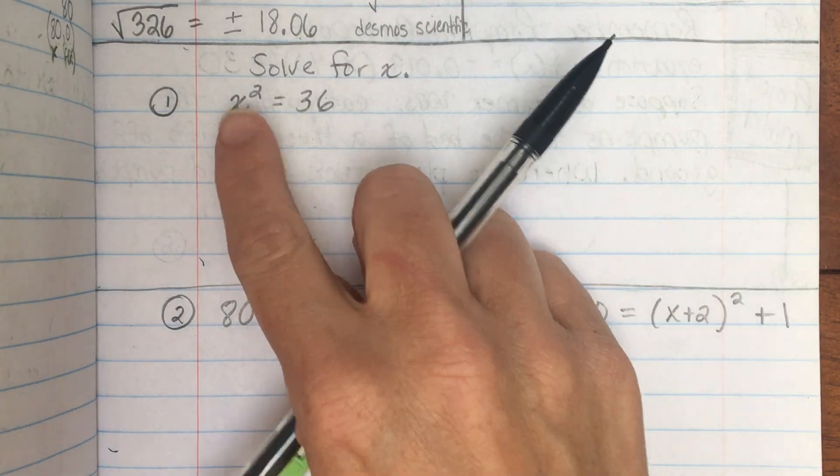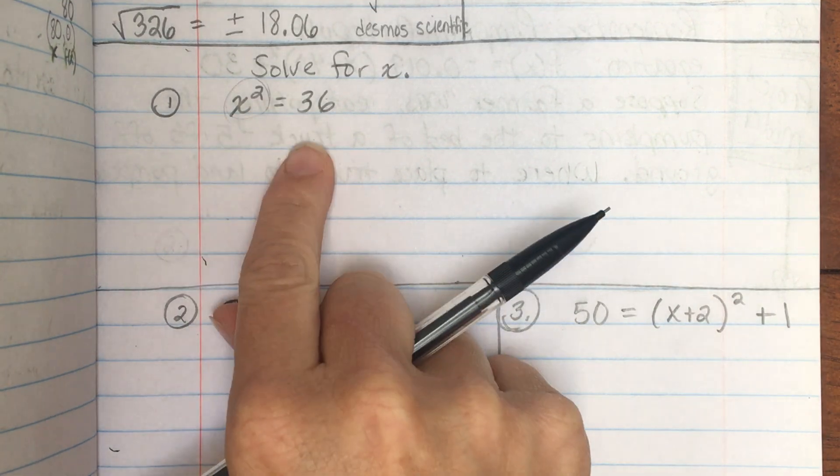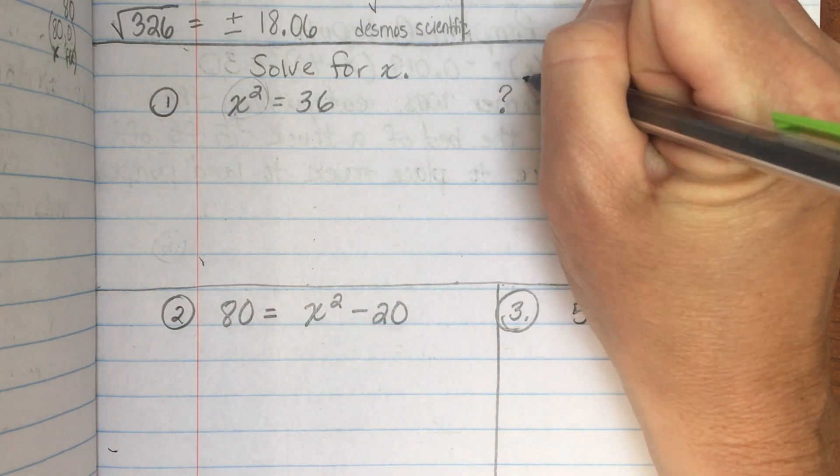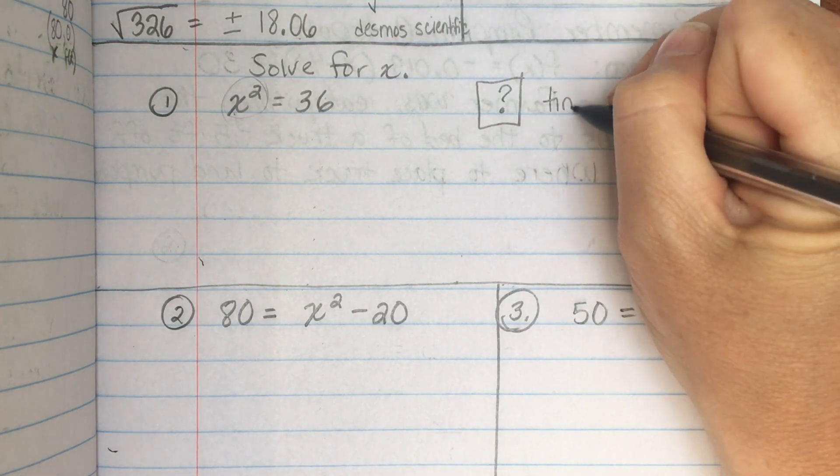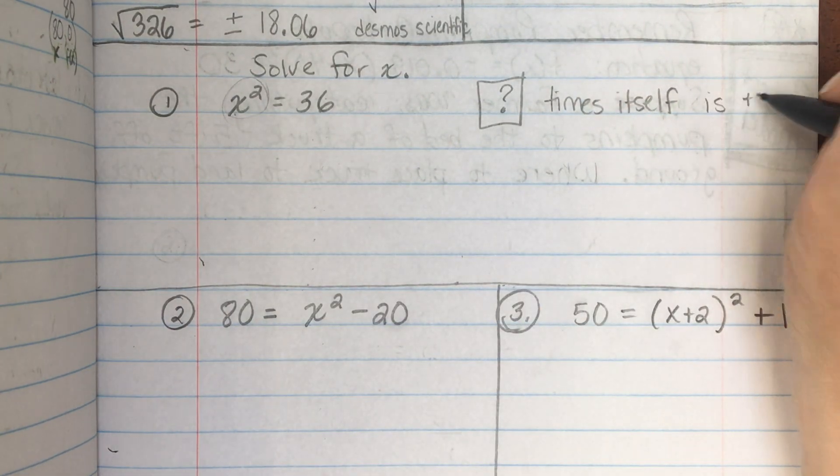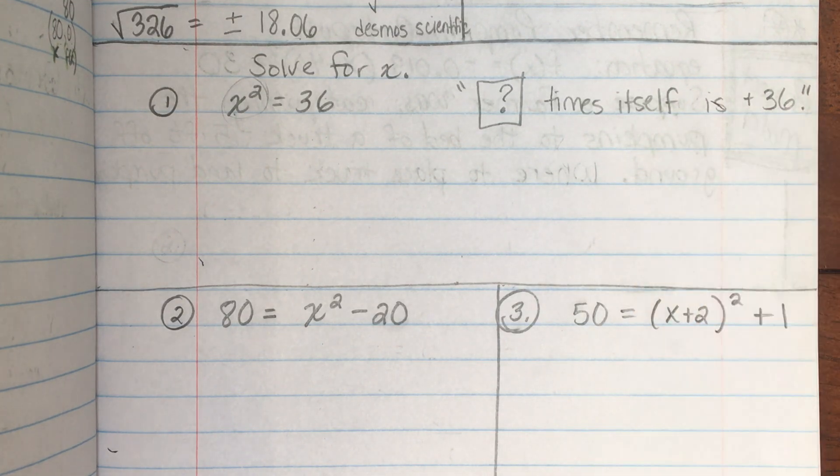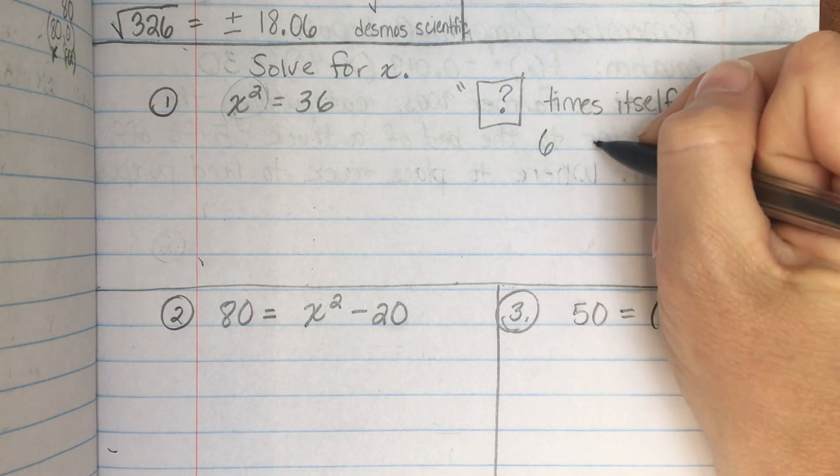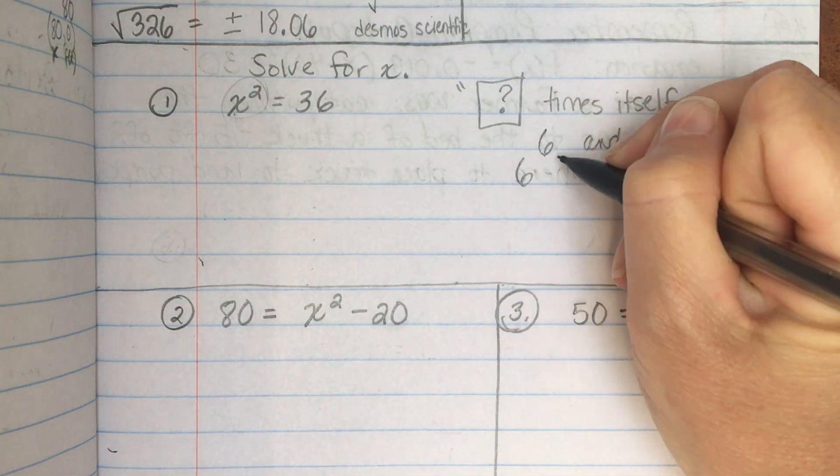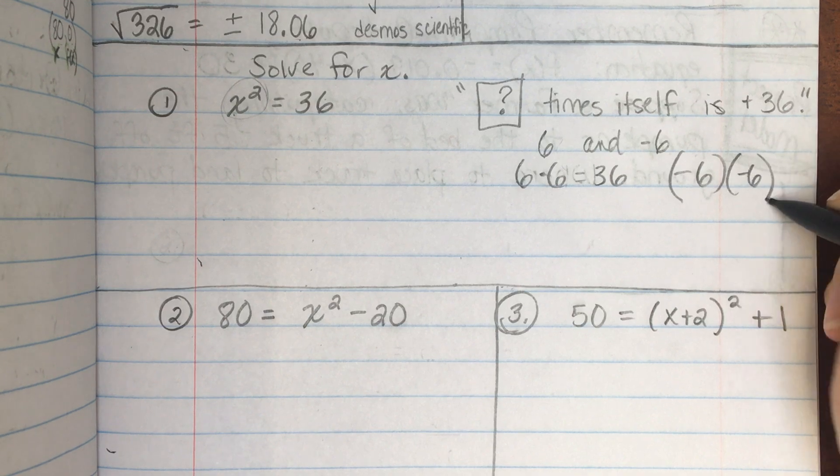Solve for x. The squared term is already isolated. So my step is to square root both sides. But before we do that, let's discuss what this equation is really saying. It's really saying what number, so some number, I'm going to call it a box, some number times itself, because that's what it means to square, is a positive 36. So what number times itself gives you a positive 36? Your answer should be 6 and negative 6. So, let's see, because 6 times itself gives you 36, and negative 6 times itself gives you 36.